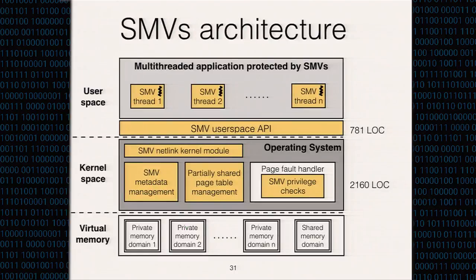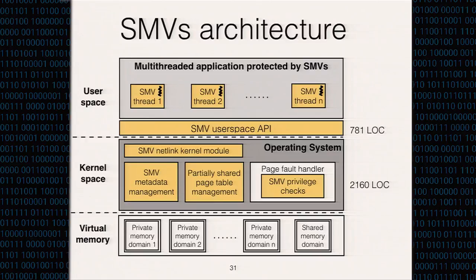We implemented the SMV API in userspace for about 800 lines of code. But what is really managing the memory views and enforcing memory references is actually in kernel space. We implemented it with about 2,000 lines of code in our Linux kernel prototype. We added an SMV kernel module for userspace programs to communicate with the kernel. The SMV metadata management manages the overall per-process isolation setup. We also manipulate the page table for threads to isolate their memory space, and utilize the page fault handler as a software monitor that traps all illegal memory accesses.